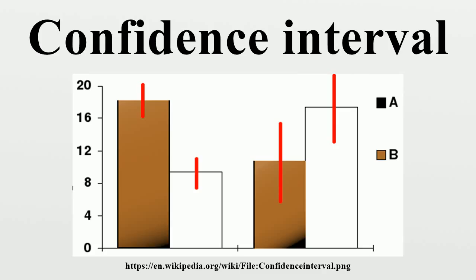The confidence interval can also be expressed in terms of a single sample. There is a 90% probability that the calculated confidence interval from some future experiment encompasses the true value of the population parameter. Note this is a probability statement about the confidence interval, not the population parameter. This considers the probability associated with a confidence interval from a pre-experiment point of view — the experimenter sets out how they intend to calculate a confidence interval and knows, before doing the actual experiment, that the interval they will end up calculating has a certain chance of covering the true but unknown value. This avoids relying on hypothetical repeats of a sampling procedure that may not be repeatable in any meaningful sense.